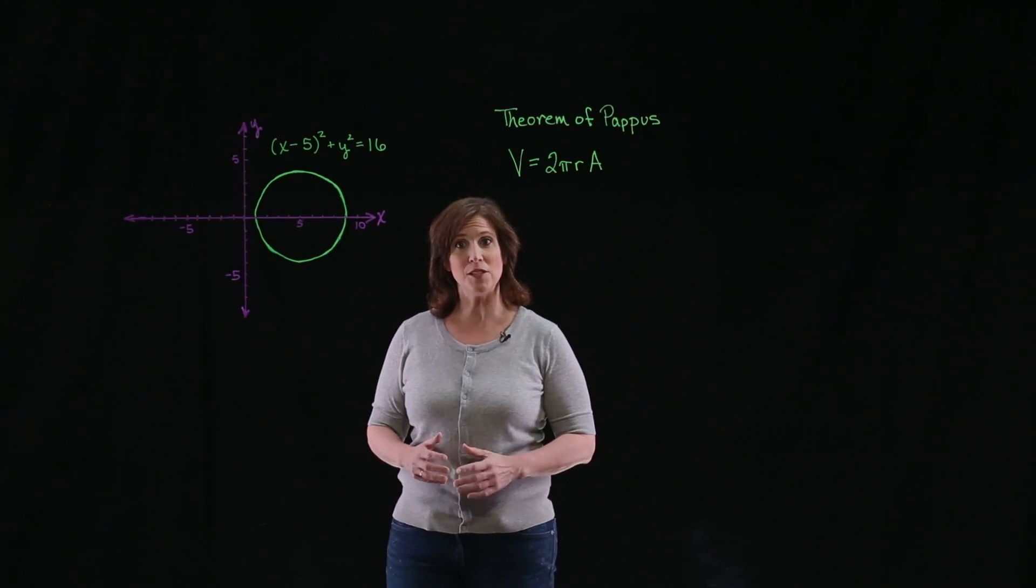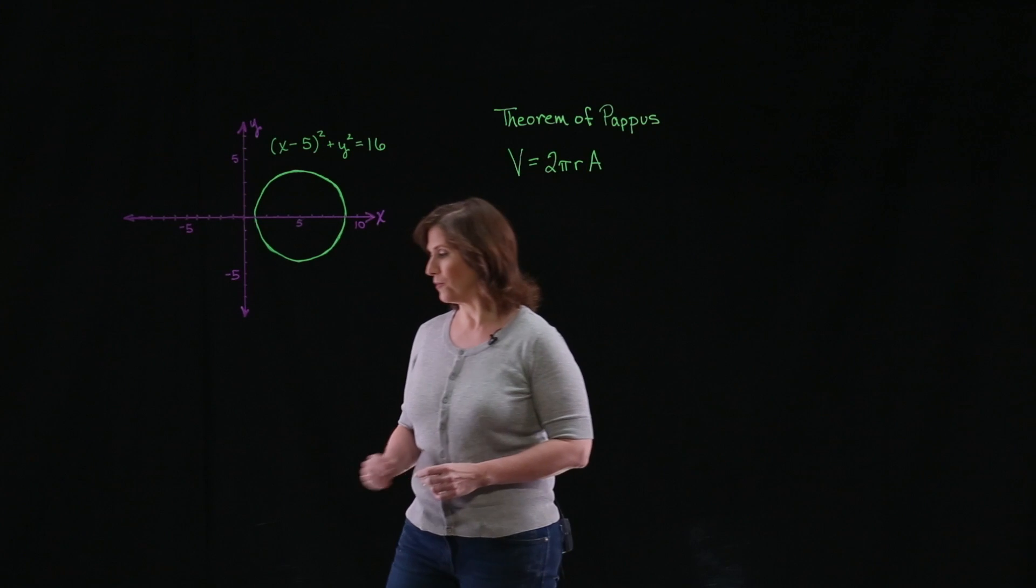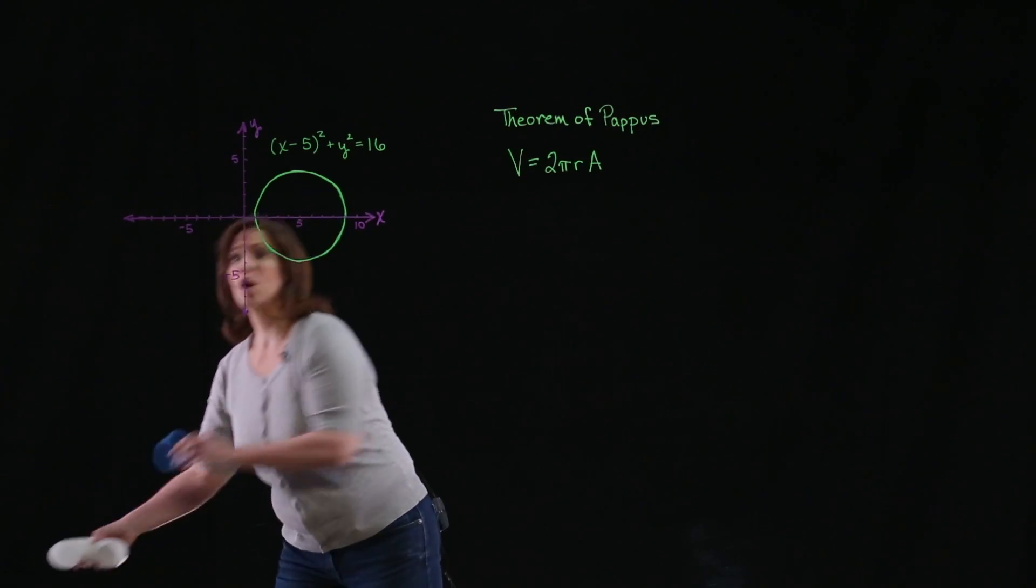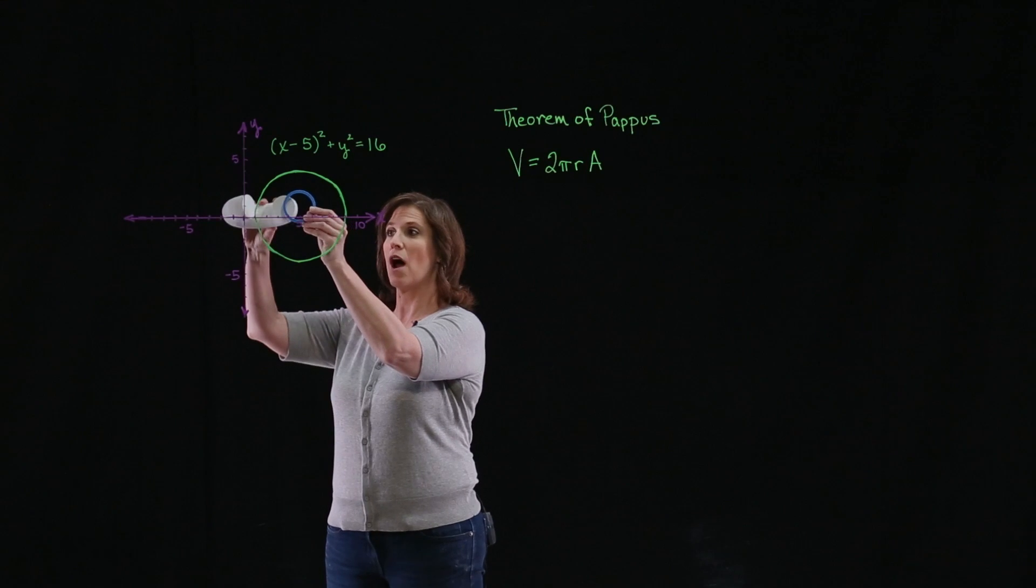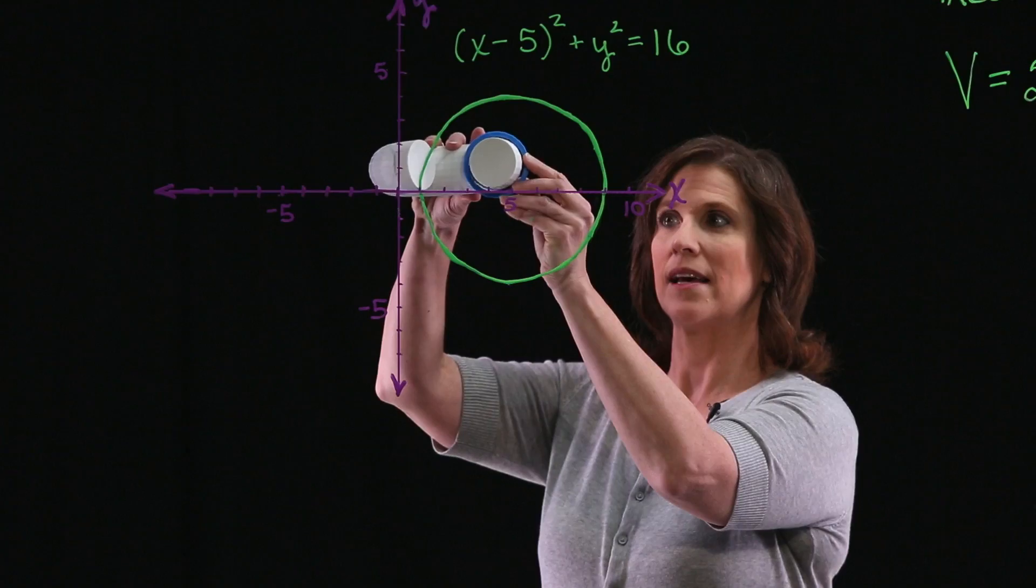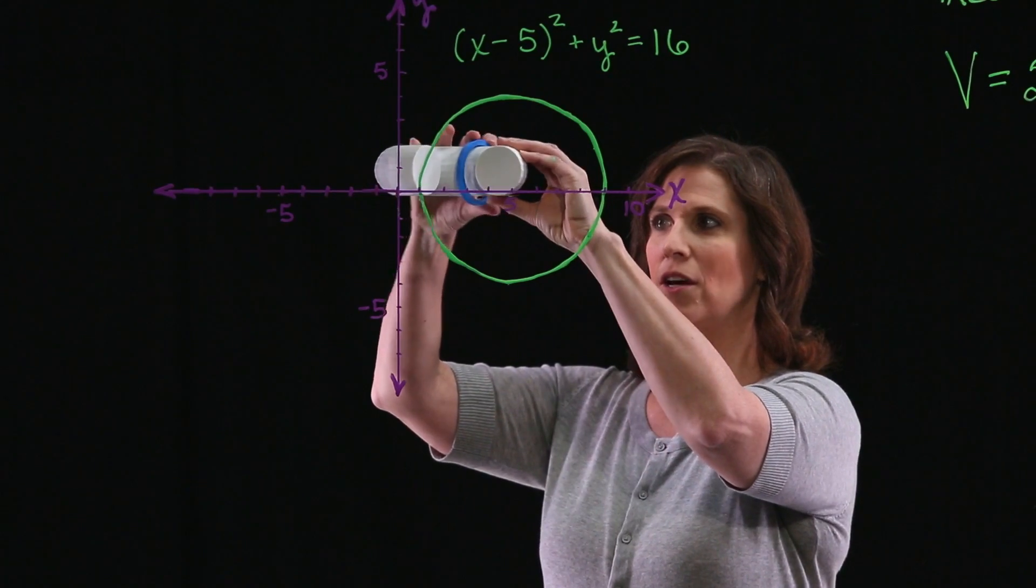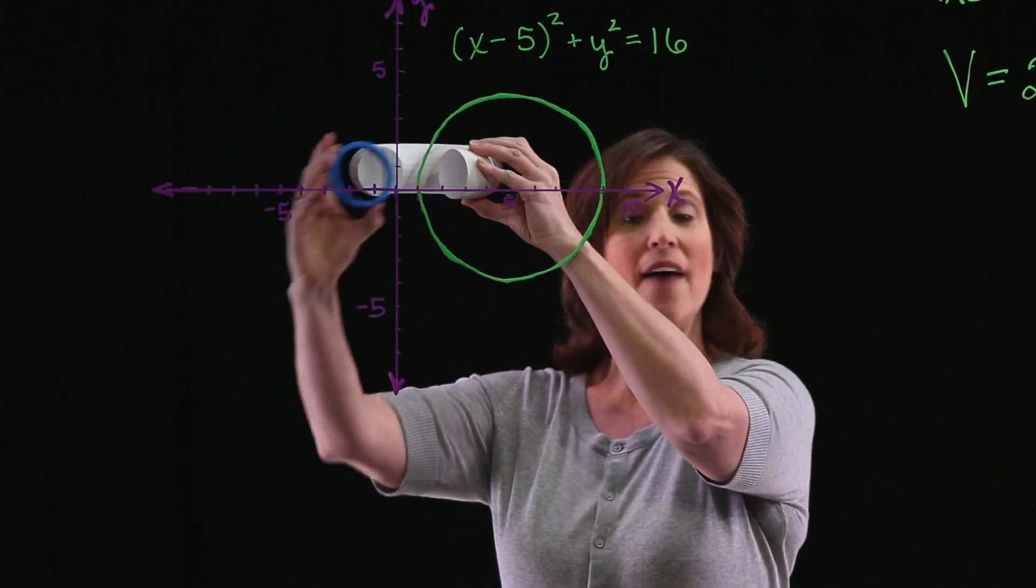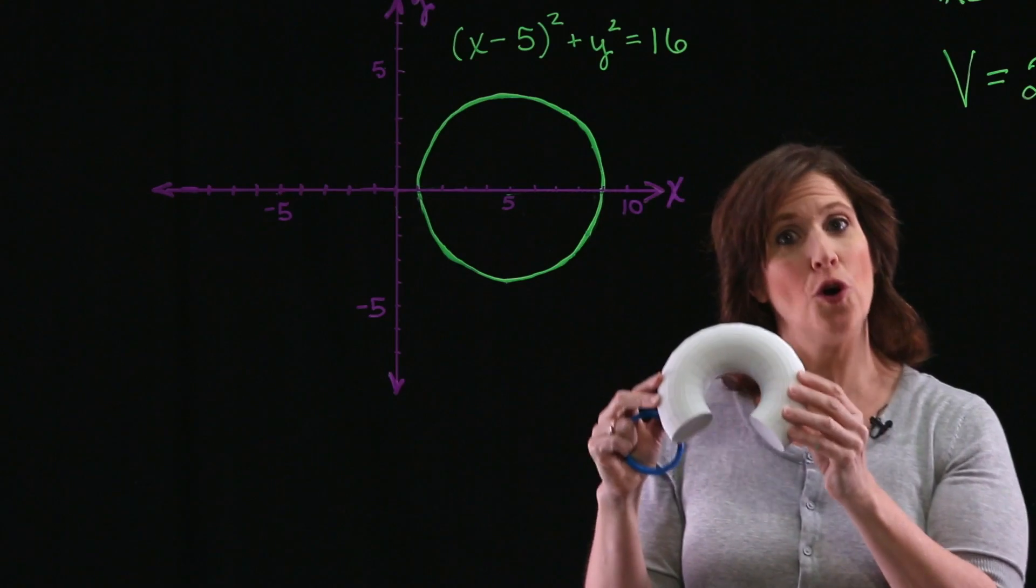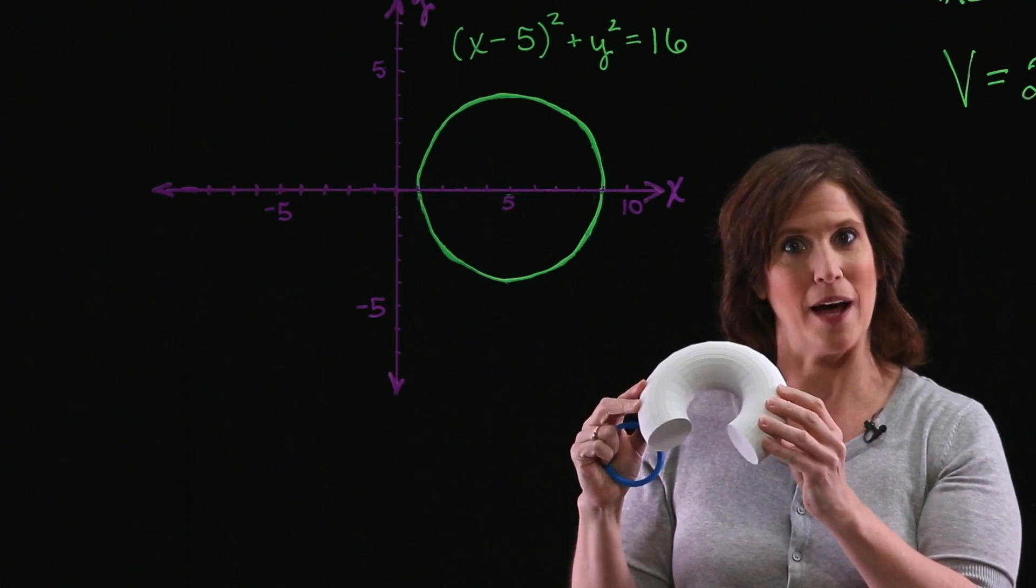Now to help us visualize this, let's take a look at a 3D figure. We're going to take the circle and rotate it around the y-axis. So as we move around, you can see that a solid is created. And that solid is called a torus. It looks like a donut.